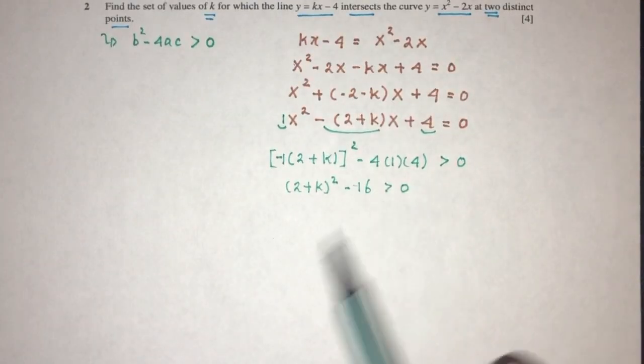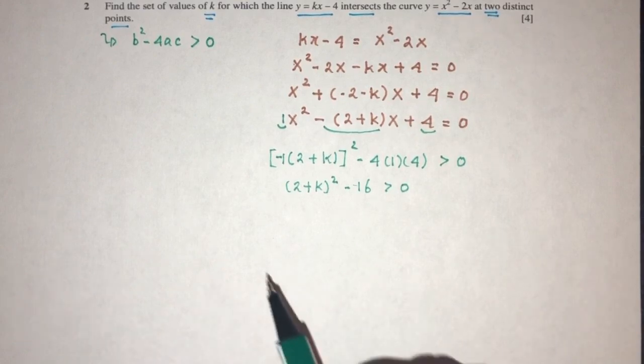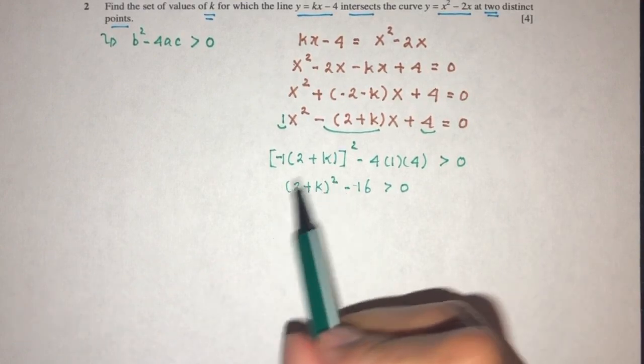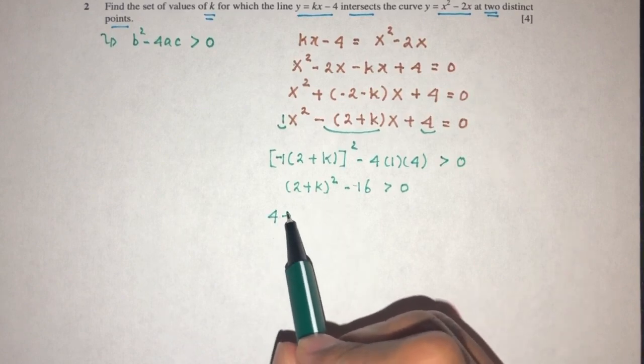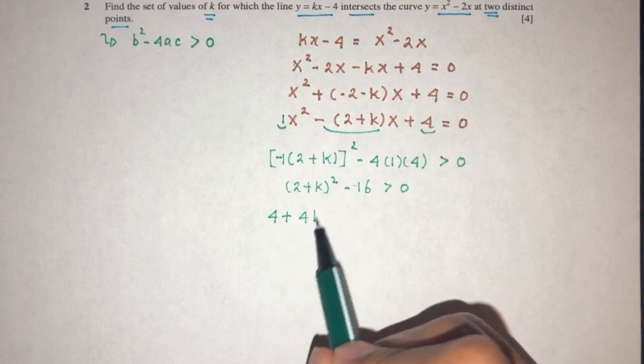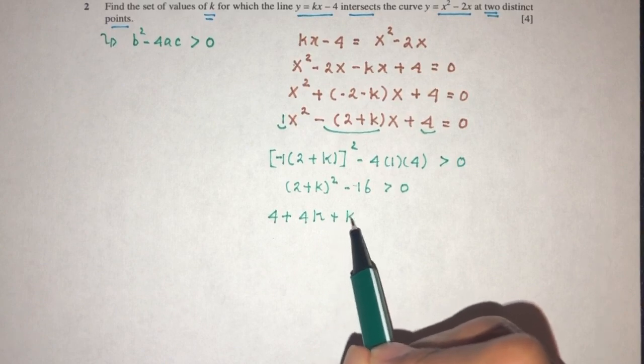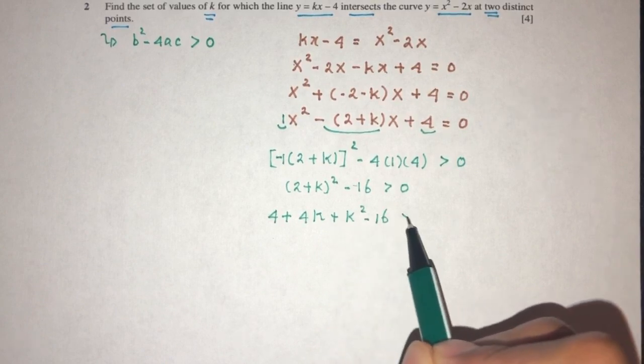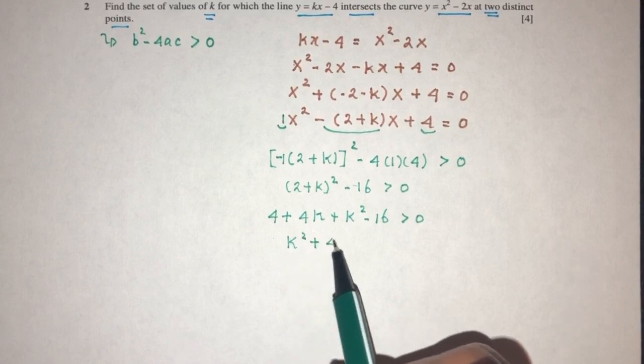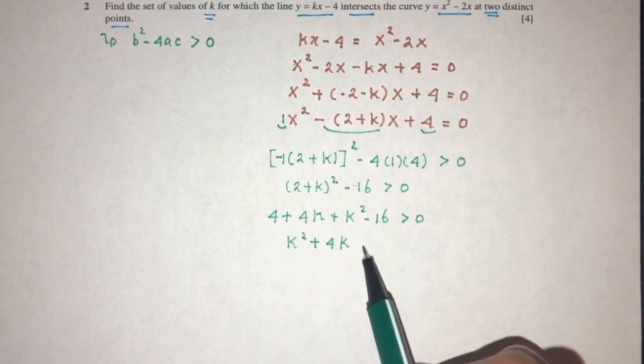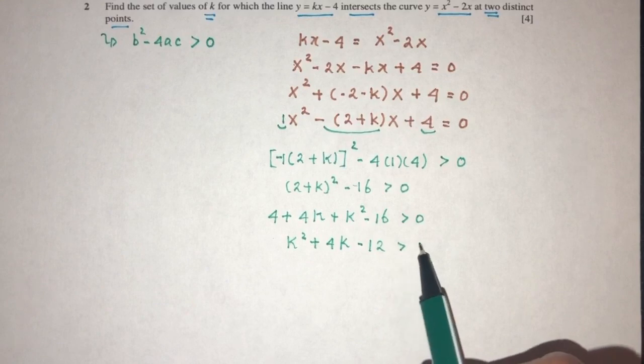Now we can send this directly over here and solve, but let me just do this step by step so we're not confused. We have to expand this. You will have 4 + 4k + k² - 16 > 0. So you have k² + 4k, 4 minus 16 will be minus 12 more than zero.